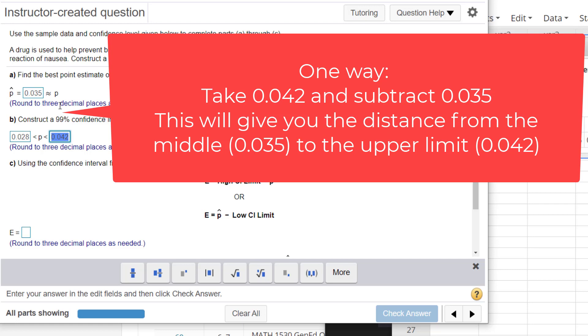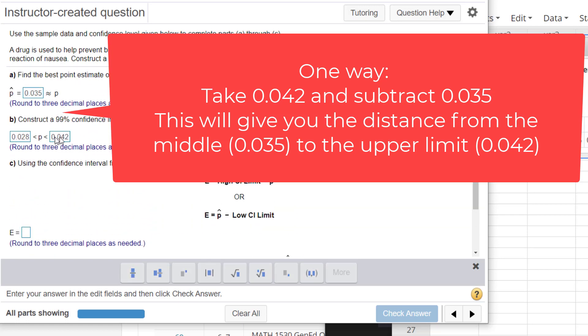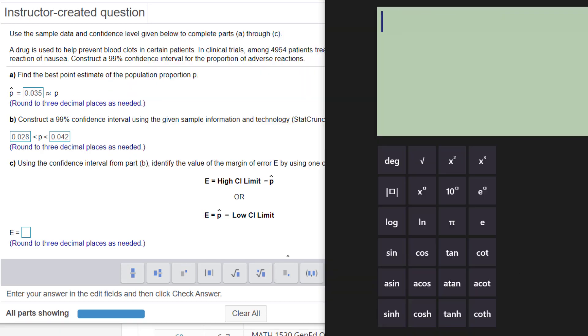0.035 is actually the direct middle of 0.028 and 0.042. So basically you find the distance between 0.042 and 0.035. That's one way to do it. And definitely have your calculator out to do that. So you'll basically do a subtraction 0.042 minus 0.035. So that's one way you can find the margin of error.